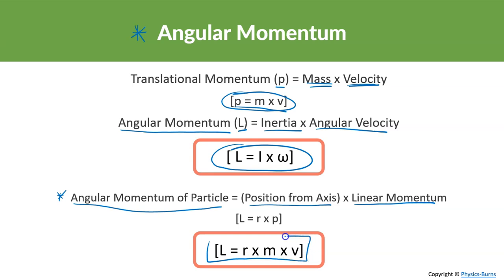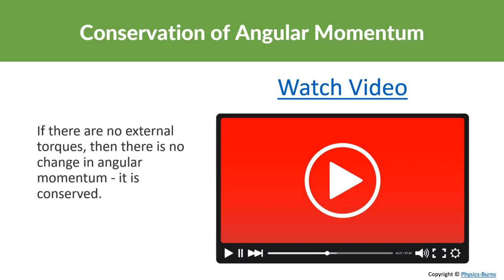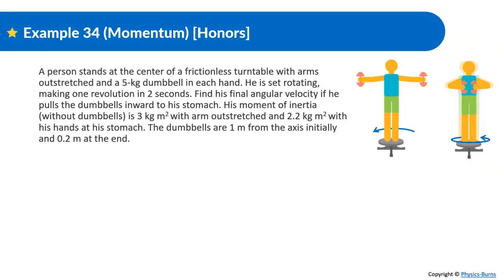We'll do a few examples to make sense of these formulas. Starting with a tough one: a person stands at the center of a frictionless turntable with arms outstretched and a 5 kg dumbbell in each hand. He is set rotating making one revolution in two seconds. Find his angular velocity if he pulls the dumbbells inward to his stomach. His moment of inertia without dumbbells is 3 kg·m² with arms outstretched and 2.2 kg·m² with hands at his stomach.